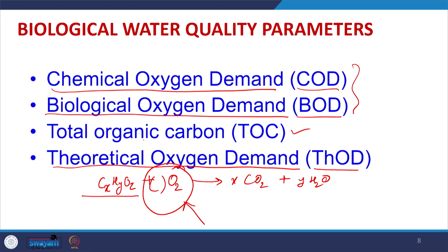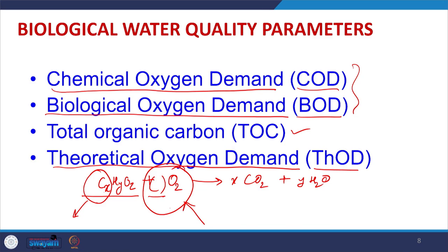TOC is essentially a pseudo-parameter for oxygen demand. Total organic carbon can also be determined and reported. We are going to study all these parameters in detail because their determination is essential for understanding whether biological wastewater treatment should be followed. We will start with COD first.